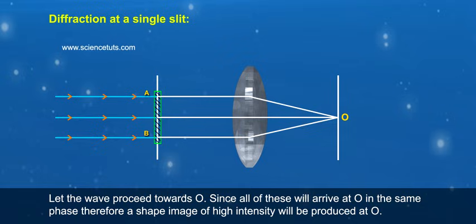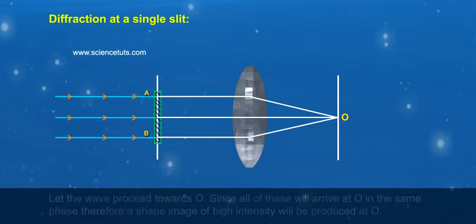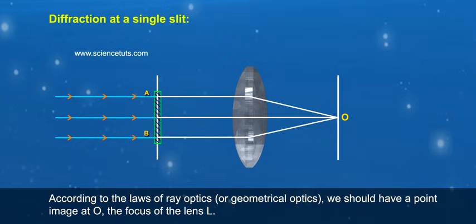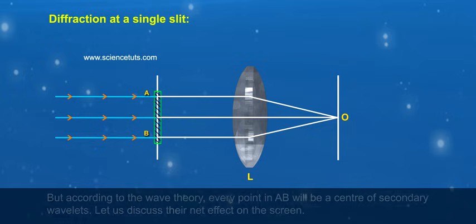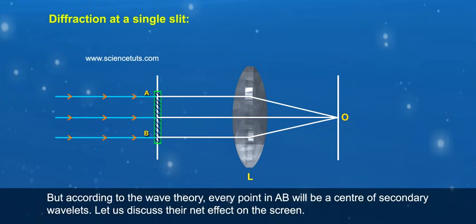Since all of these will arrive at O in the same phase, a sharp image of high intensity will be produced at O. According to the laws of ray optics or geometrical optics, we should have a point image at O, the focus of the lens L. But according to the wave theory,